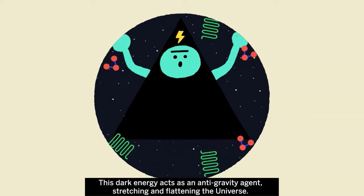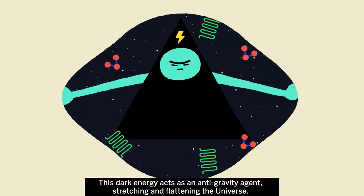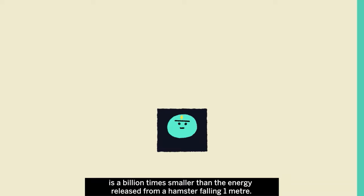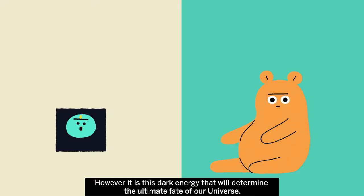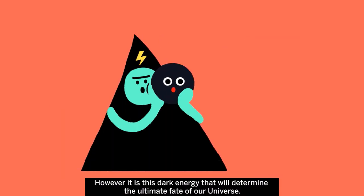This dark energy acts as an anti-gravity agent, stretching and flattening the universe. The amount of dark energy in a cubic meter of space is a billion times smaller than the energy released from a hamster falling one meter. However, it is this dark energy that will determine the ultimate fate of our universe.